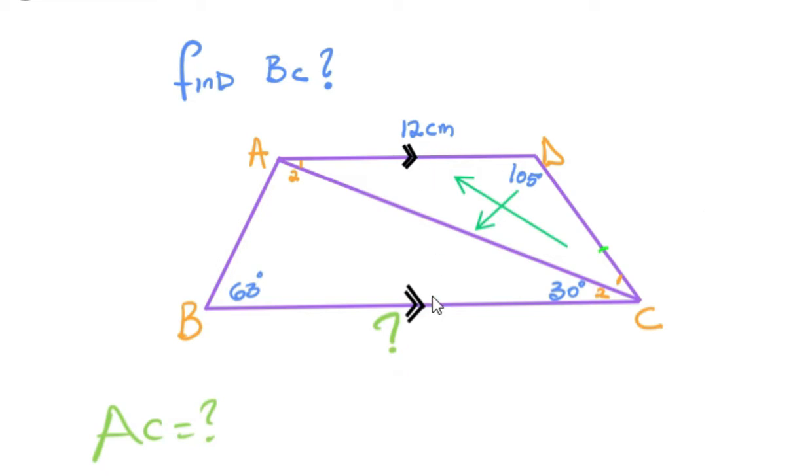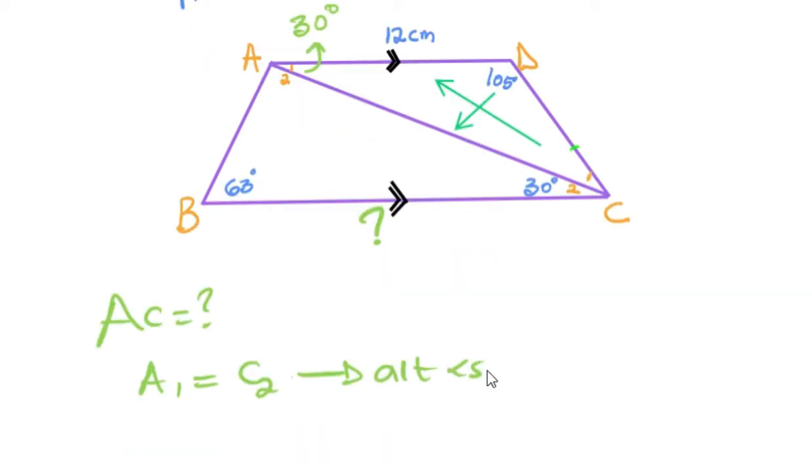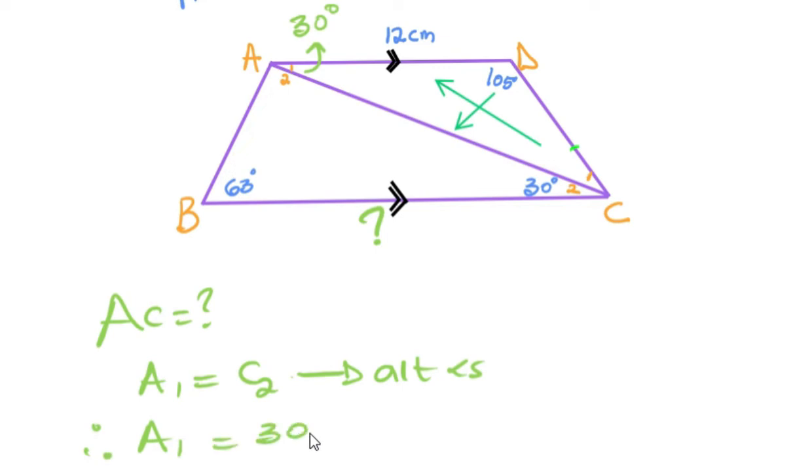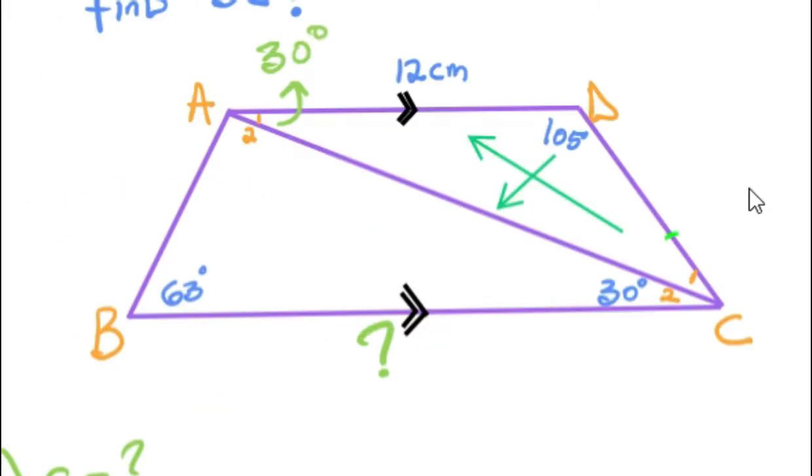The first thing I would do is calculate the value for C1. I notice these two lines are parallel, so that automatically tells me that this angle we have for A1 would be 30 degrees. Through interior angles of the triangle adding up to 180, it gives me my value for C1. So C1 is 45 degrees. Then we can use the sine rule with the pair that we have.